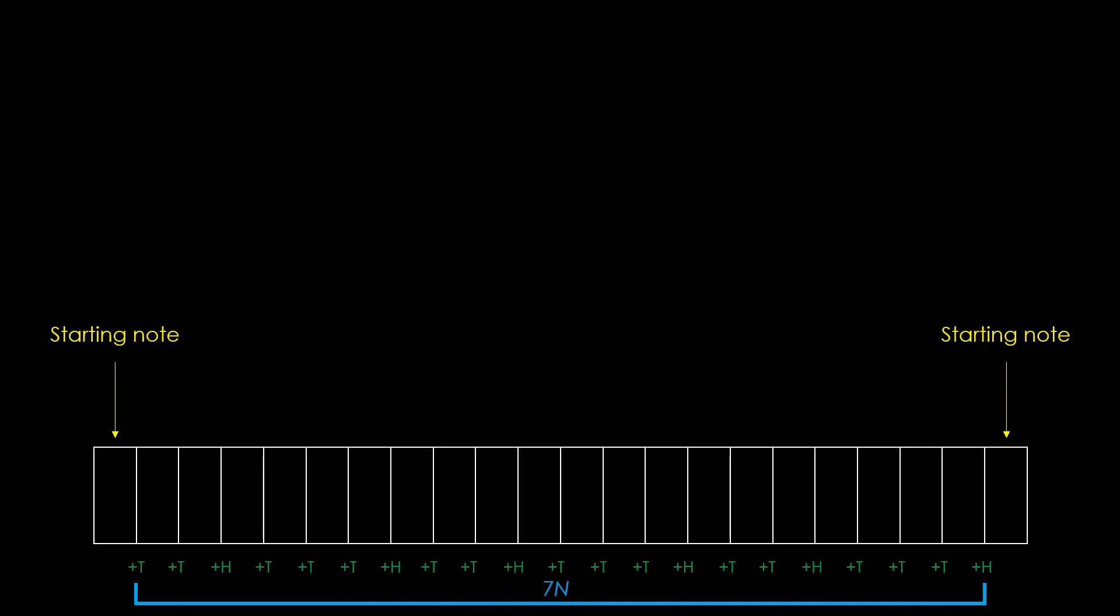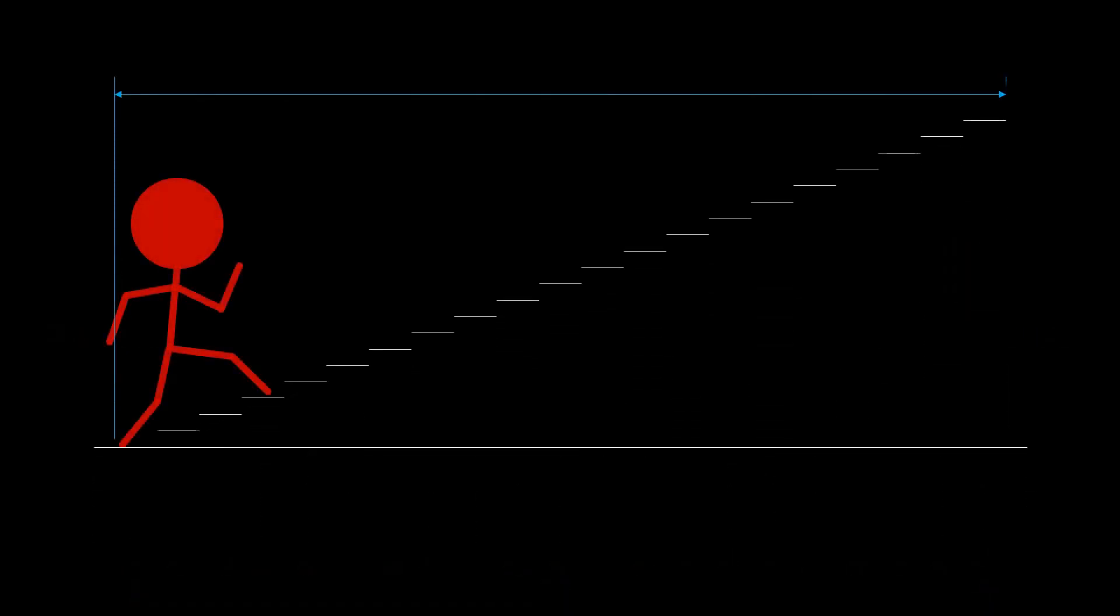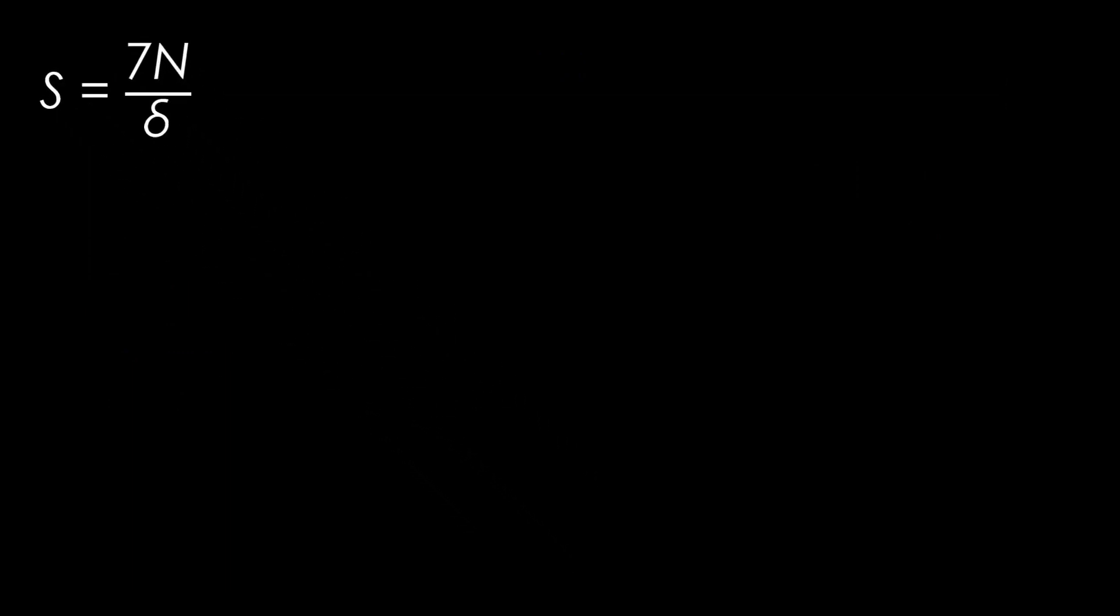Equivalently, we can imagine a flight of stairs consisting of 7n steps. If we walk up the stairs at delta steps per stride, how many strides does it take to reach the top? The solution to this is mathematically represented as s equals 7n over delta.